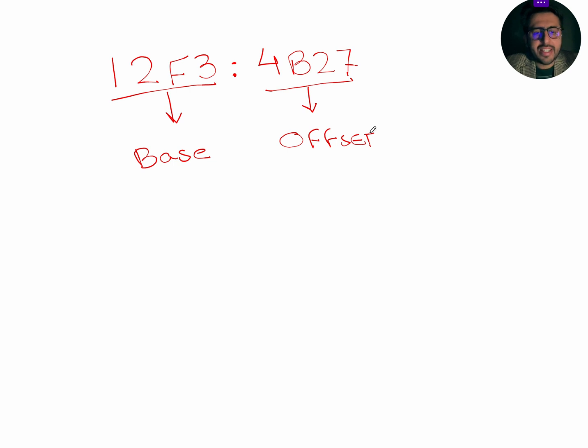A base address is the starting address of the segment, while the offset address is the distance from the base address.